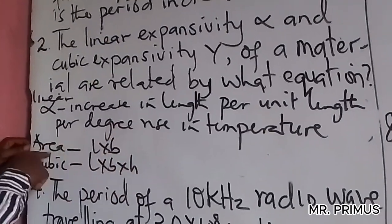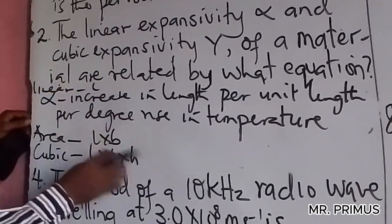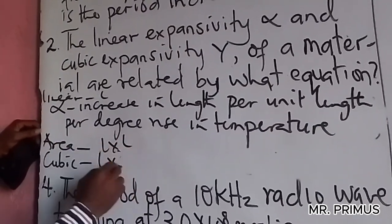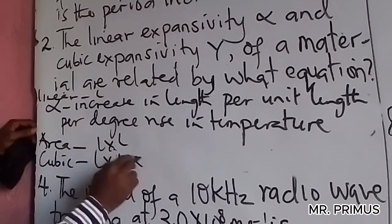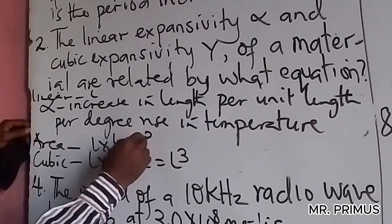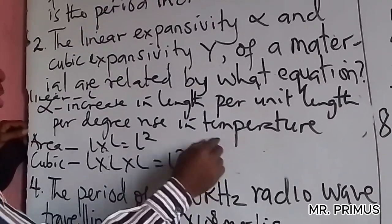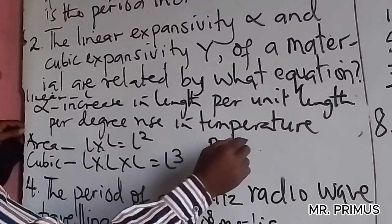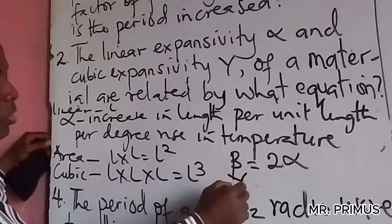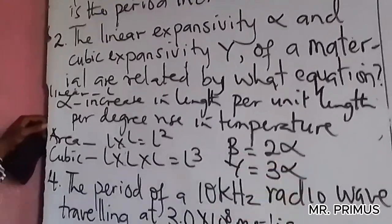In terms of dimensions: length is L¹, area is L², volume is L³. So area expansivity equals 2 times alpha, and cubic expansivity equals 3 times alpha. The relationship is: cubic expansivity = 3α, and area expansivity = 2α.